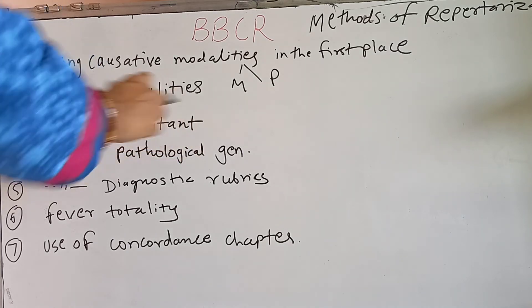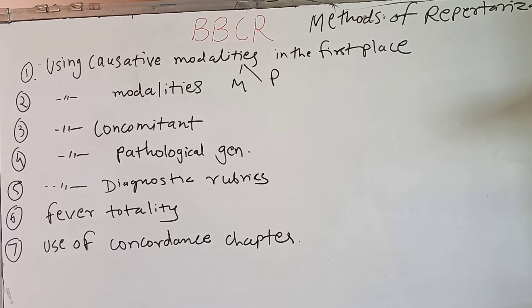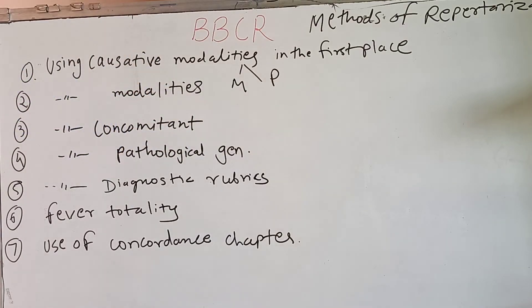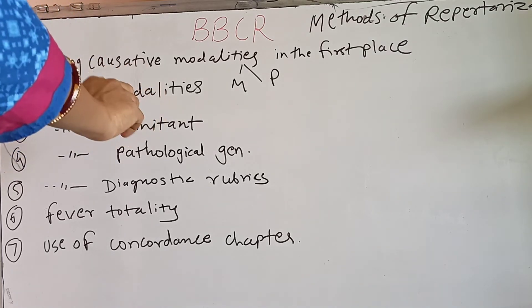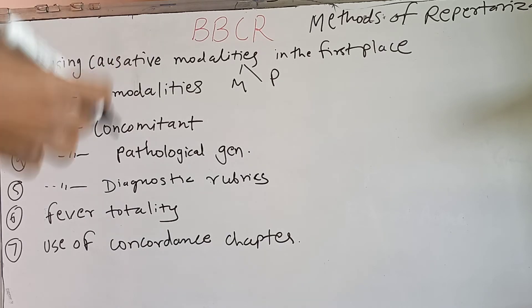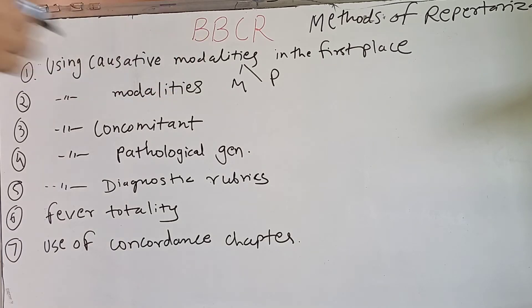The third method is using the concomitant in the first place. Concomitants are not present in every case, but when found, they are a very good symptom to start repertorization with. For example, if a patient has cough with pain in the shoulder — these two are not normally related — this is an excellent concomitant. Only four drugs cover 'cough with pain in shoulder': China, Digitalis, Pulsatilla, and Silicea. We then differentiate among these four using mental symptoms, constitution, and physical generals to make the final selection.